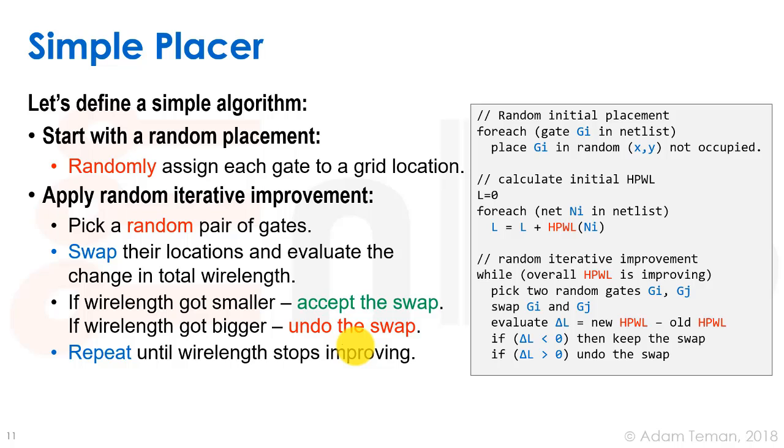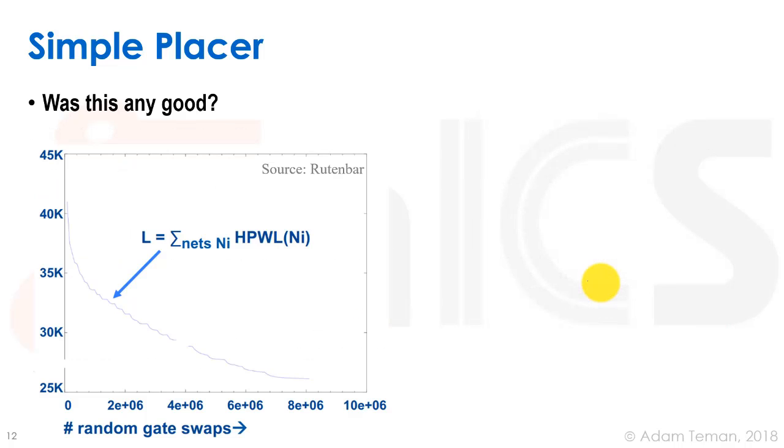If the difference in our wire length - the new half perimeter wire length minus the old half perimeter wire length - if it got smaller, then we're going to accept the swap. If not, we're going to undo the swap and go to the next iteration of our random selection. We're going to repeat this while the total half perimeter wire length is improving. Once it stops improving, it's saturated, and we're going to stop.